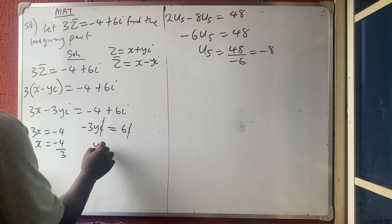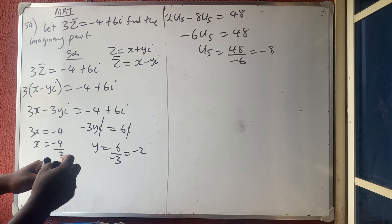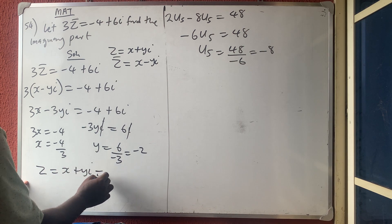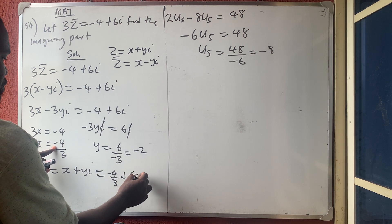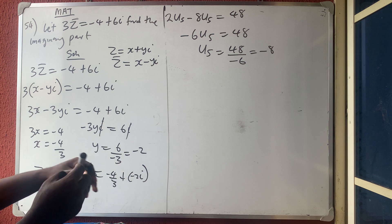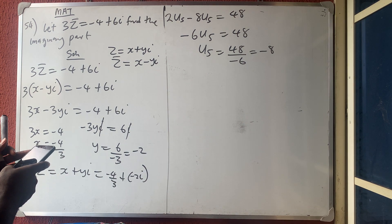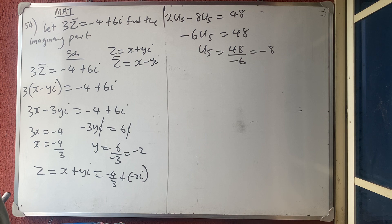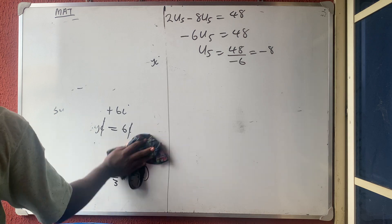Therefore z = x plus yi = minus 4/3 plus (minus 2)i. The imaginary part is minus 2i. That is all — very simple. We move to question 55.